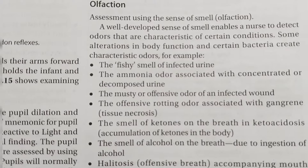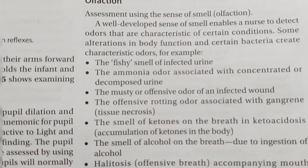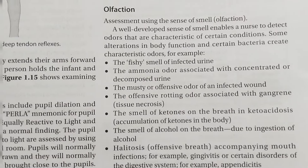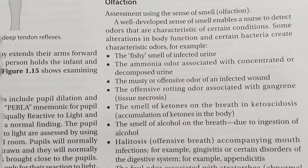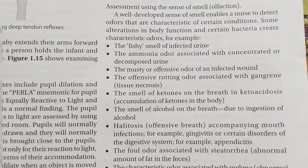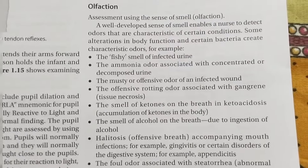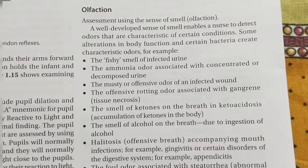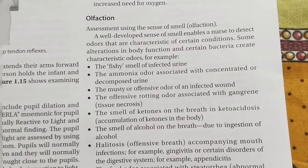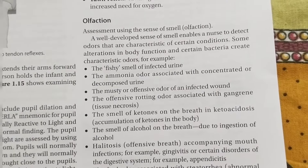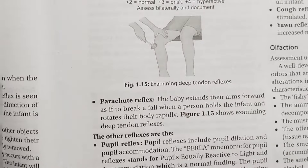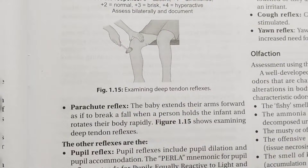The next method is olfaction. Olfaction uses the nose and the sense of smell to assess for normal or abnormal smells. For example, a fish smell from a wound indicates infection, while if there is a normal smell, there is likely no disease condition or abnormal bacterial growth.